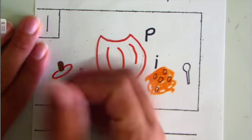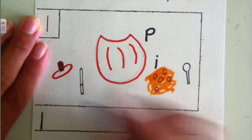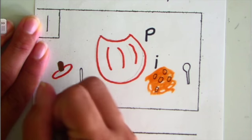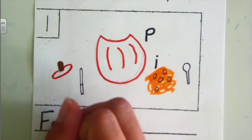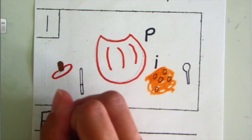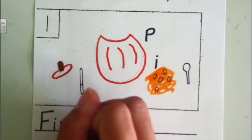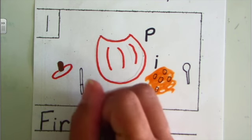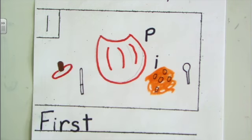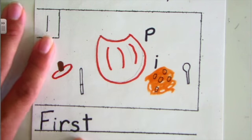So right here, I'm going to write F, I, R, S, T. You can copy it straight from your personal word wall.